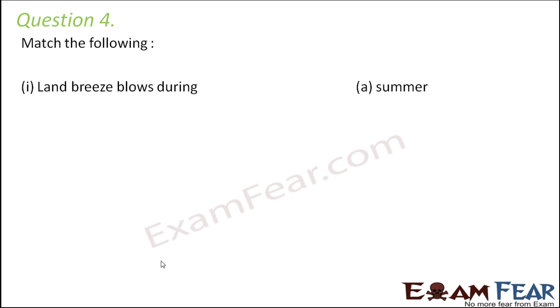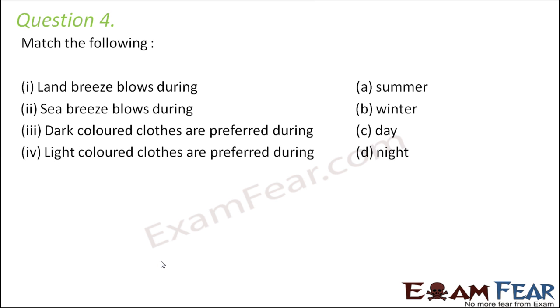Question number four, match the following. So here you have columns one and two and you have to make the right match. Land breeze blows during night, and sea breeze will flow during the day. Dark colored clothes absorb more heat so they keep you warm during winters. Light colored clothes should be worn during summers because they reflect most of the heat and a very small amount of heat gets absorbed, so your body remains cool.